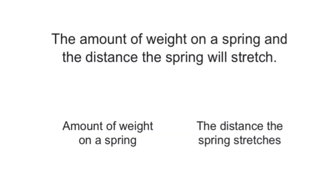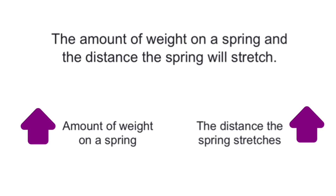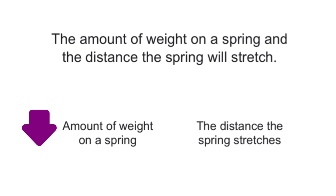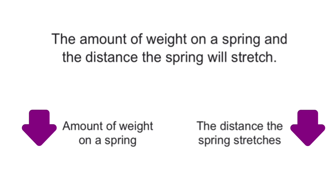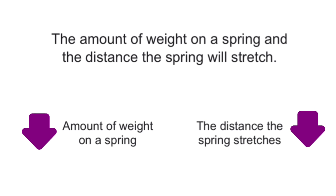The amount of weight on a spring and the distance the spring will stretch are directly proportional to each other. If you put more weight on a spring, the spring will stretch a longer distance. On the other hand, if you put less weight on a spring, the spring will stretch a shorter distance. So the weight on the spring is directly proportional to the distance the spring will stretch.